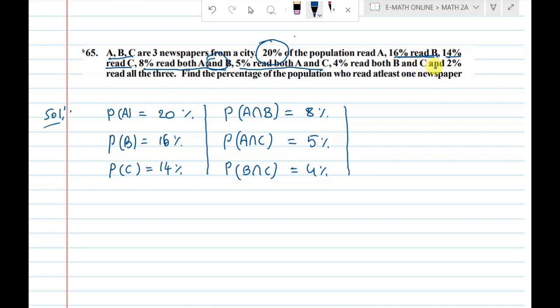Last and final, 2% read all the three. All the three. A intersection B intersection C equal to 2%.